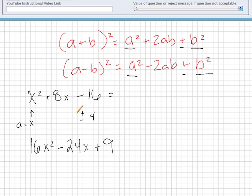So we know for sure that this is not a perfect square because if it was a perfect square, the A² is always positive and the B² is always positive. So this is not a perfect square.